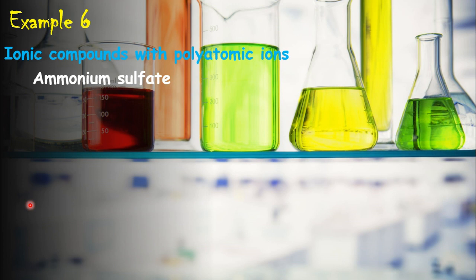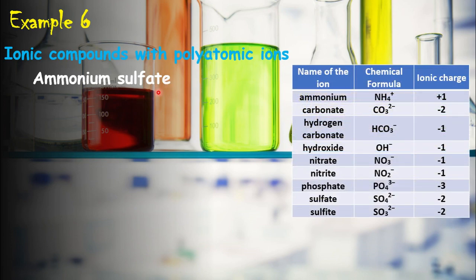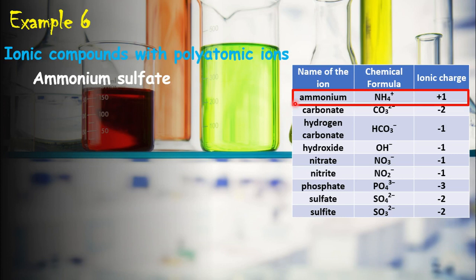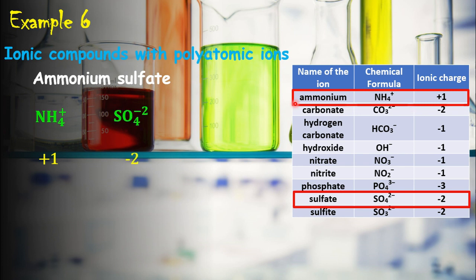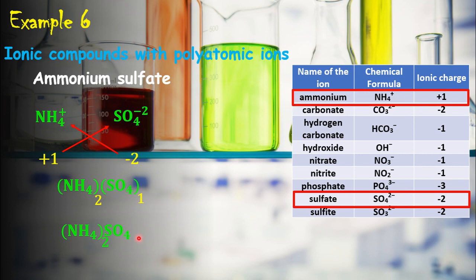Our next example is ammonium sulfate. This ionic compound is somewhat different from the previous ones because both the positive ion and the negative ion are polyatomic ions. The positive ion is ammonium and the negative ion is sulfate. Using the common polyatomic ion table, ammonium is NH₄⁺ with a charge of plus one and sulfate is SO₄²⁻ with a charge of minus two. The charge of ammonium becomes the subscript of sulfate and the charge of sulfate becomes the subscript of ammonium, so the chemical formula of ammonium sulfate is (NH₄)₂SO₄.